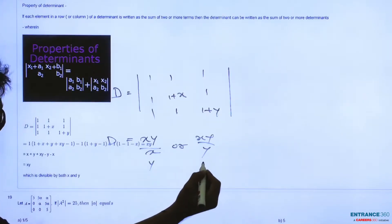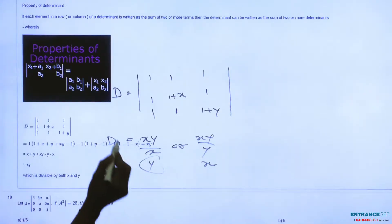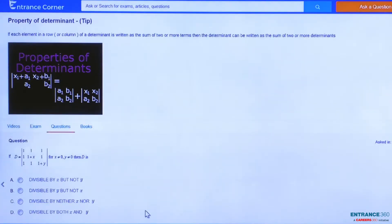Let's check the options. After solving, we get option D as our correct answer, where D is divisible by both X and Y.